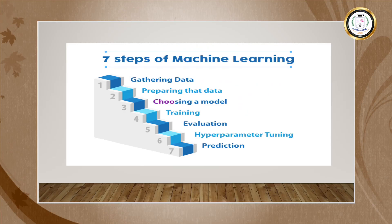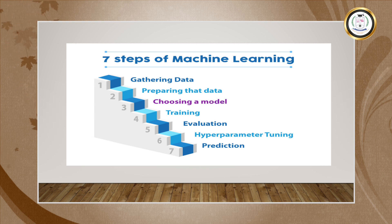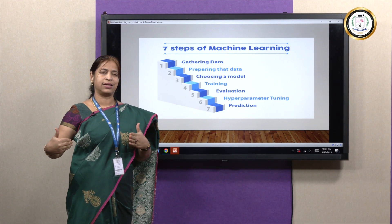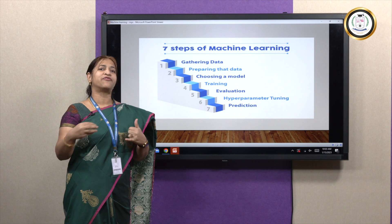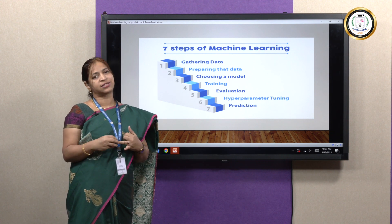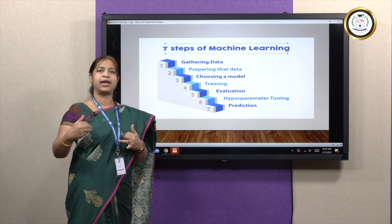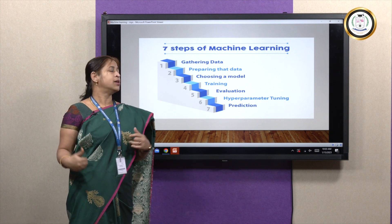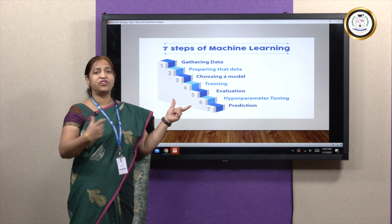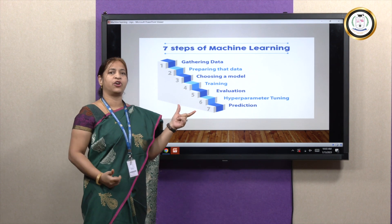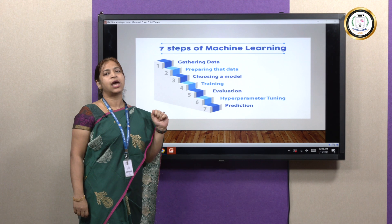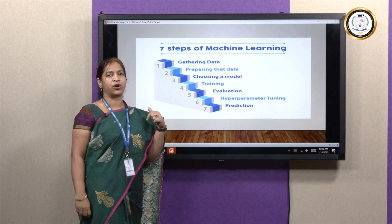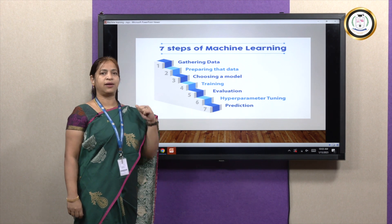The next step is to choose the model. In machine learning, we have various techniques — for example, classification technique, clustering technique, and so on. We need to find out which model we are going to go with and choose the appropriate model for our task.